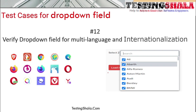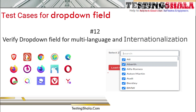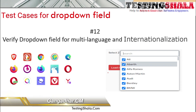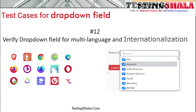Since dropdowns are used in web or mobile applications, you should ensure they work seamlessly across different languages and currencies. Dropdown values can be in Chinese, Japanese, Hindi, Kannada, Tamil, Telugu, or any language. Your dropdown should work seamlessly based on the country and language, so validate for internationalization and localization as well.